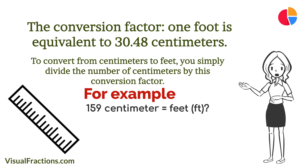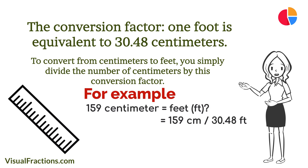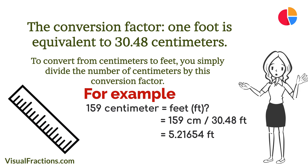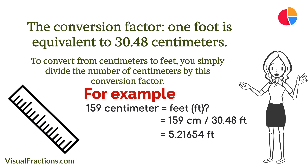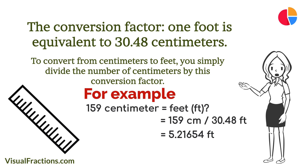We begin by dividing 159 by the conversion factor of 30.48. The result is approximately 5.21654 feet. To break this down into feet and inches, we'll separate the whole number from the decimal. The number five signifies the full feet, while the remaining decimal 0.21654 indicates a fraction of a foot.